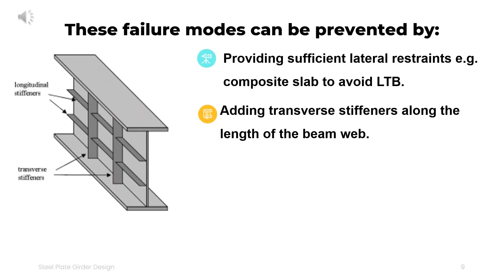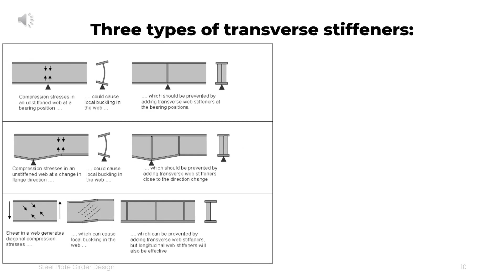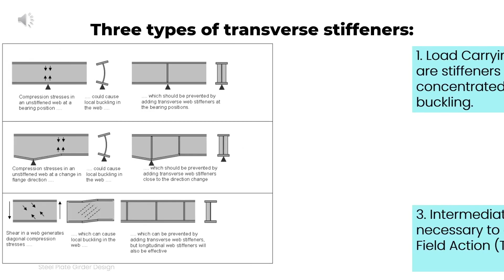These failure modes can be prevented by providing sufficient lateral restraints — for example, a composite slab — to avoid lateral torsional buckling, and by adding transverse stiffeners along the length of the beam web. The functions of transverse stiffeners are to help combat the effects of web buckling and to provide support to any concentrated load or reaction.